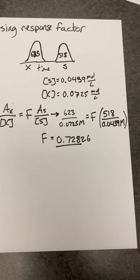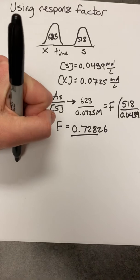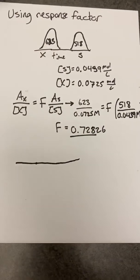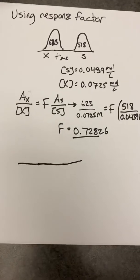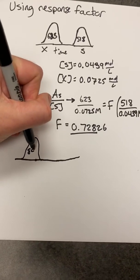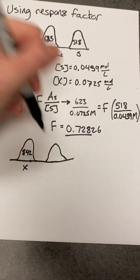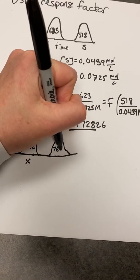And so now when we maybe use this in further calculations, let's say we run another sample. And we find that the peak areas are 842 for X and 765 for S.